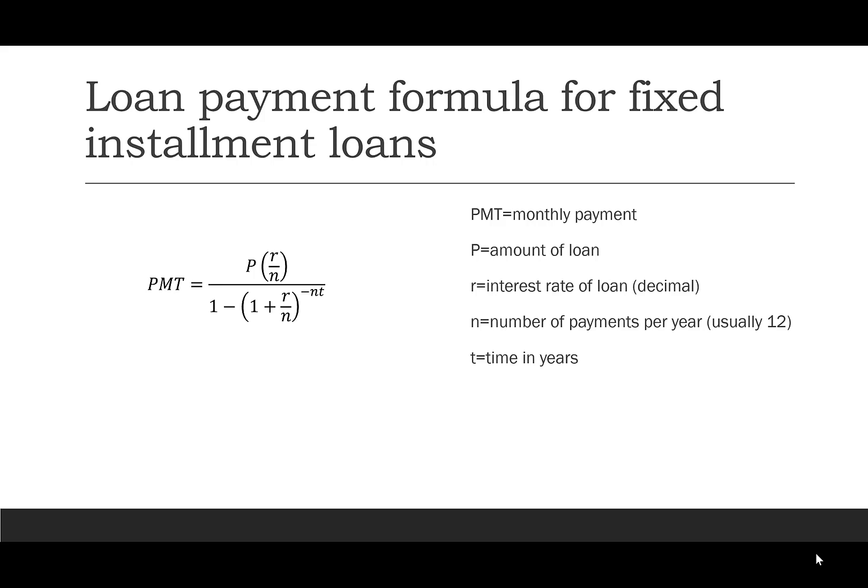As you put this into the calculator, it really matters what kind of calculator you're using because of the order of operations built in. If you're using a scientific or handheld calculator, you'll want to put parentheses around the denominator: 1 minus (1 + R/N) to the negative NT. If you're using Desmos or Geogebra, it should work as written.